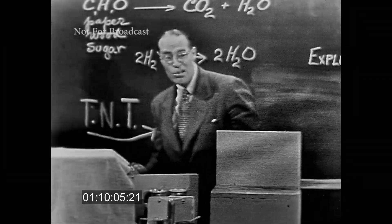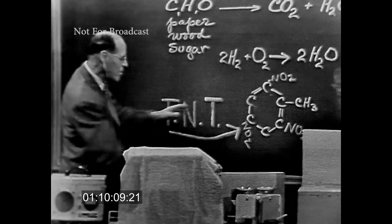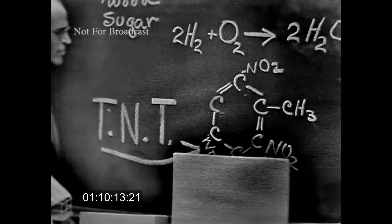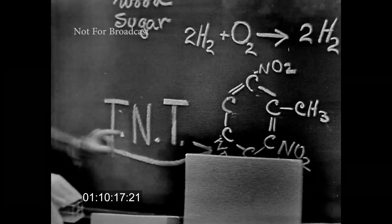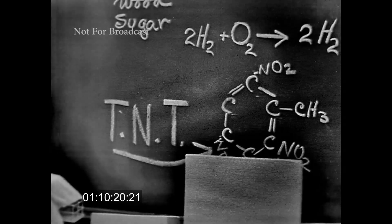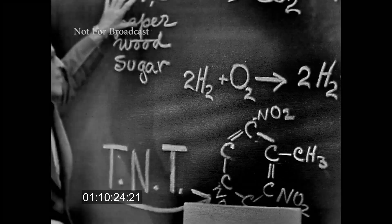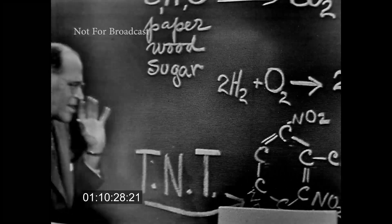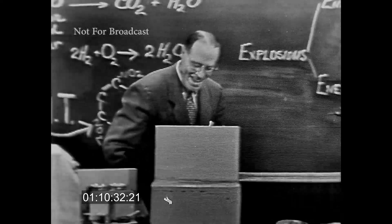But then there's another explosive you might be interested in — TNT. This is a model of what it looks like. It's a ring of carbons, and here's some carbon and hydrogen, and then at three places there are NO₂ — or nitro — groups. That's why it's trinitrotoluene. When this explodes, you don't have to wait for the oxygen to come down because it has the oxygen in it already. Anything that reacts quickly like that will be an explosion. So that's the way TNT explodes.